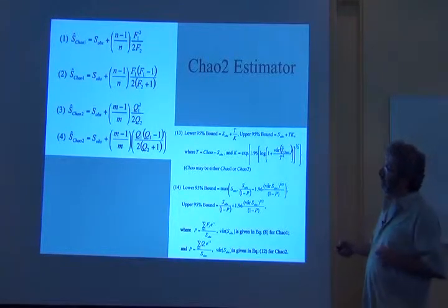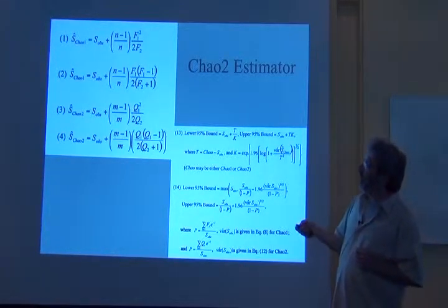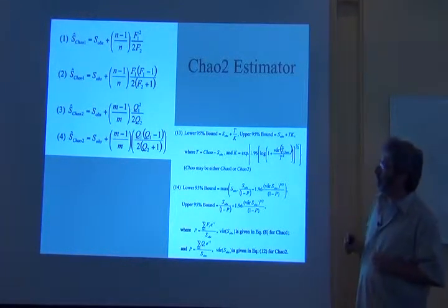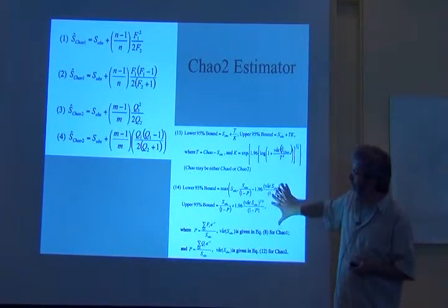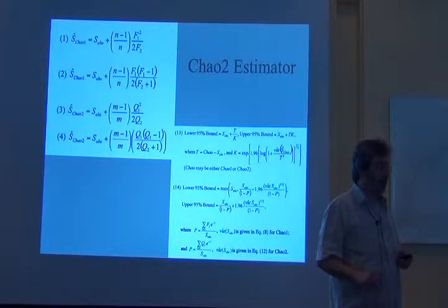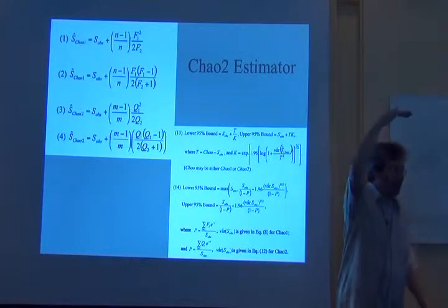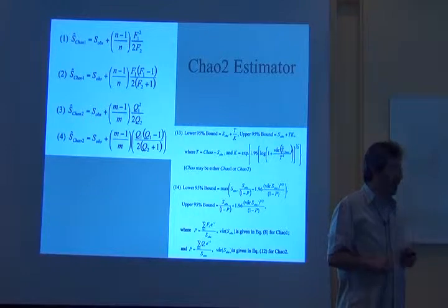And Chao gives us a couple different versions of these equations. I'm not going to go into the details of that. And she also gives us equations for lower and upper bounds. So that confidence interval that we were needing earlier.